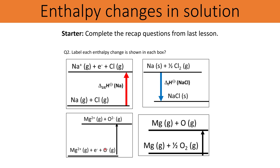In the next example our change is oxygen 1 minus ions to oxygen 2 minus ions, both gaseous. So what we're looking at here is the second electron affinity of oxygen. You'll notice that this is endothermic as remember that energy is required to overcome the force of repulsion by trying to put an electron into an already negative ion.